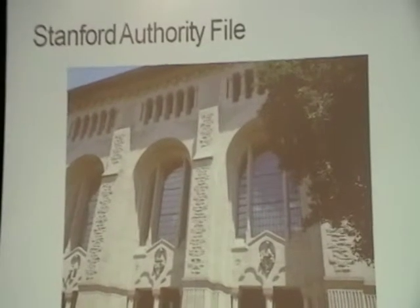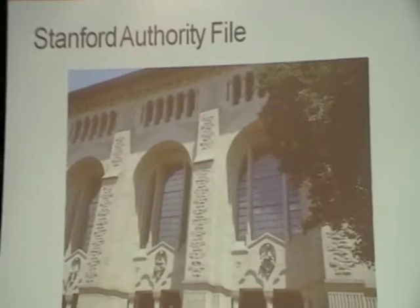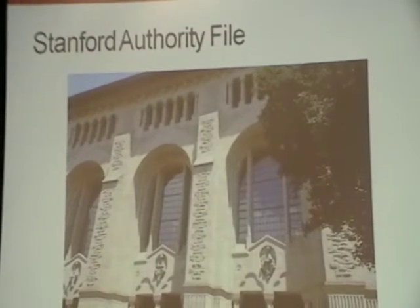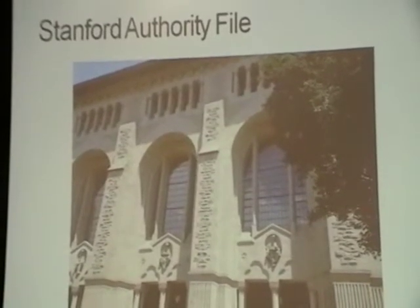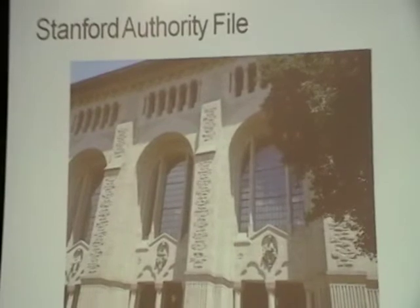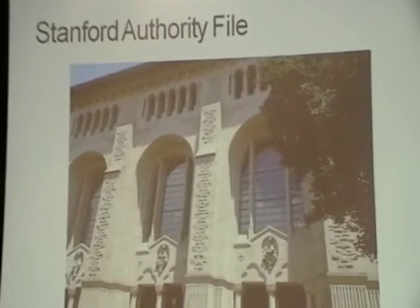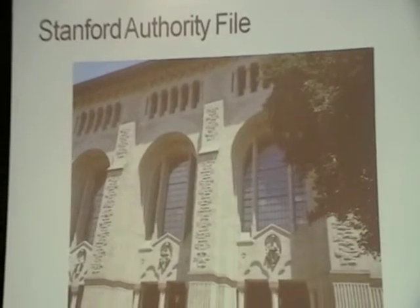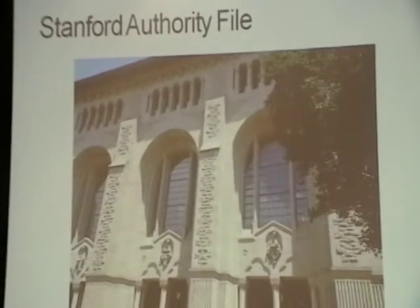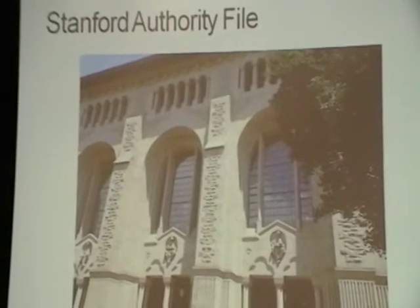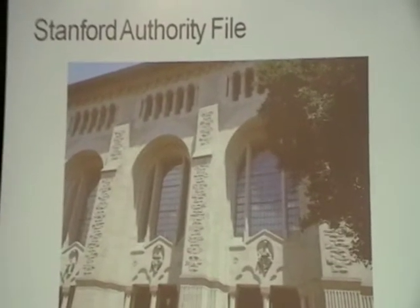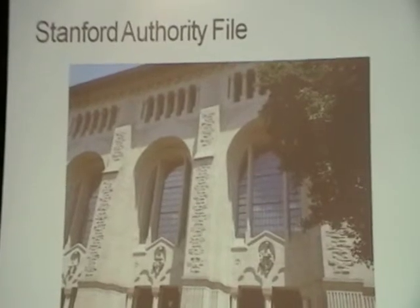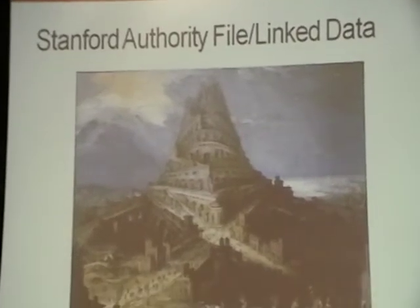The Stanford Authority File will send those publications to faculty for confirmation — the carrot being that confirmed publications get added to their visible resume, while rejections are fed back so we can remove incorrect attributions. If faculty reject something, it comes back to the Stanford Authority File so we can note that this publication is not by that person.